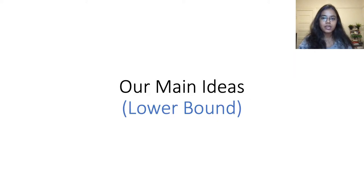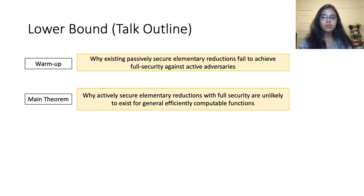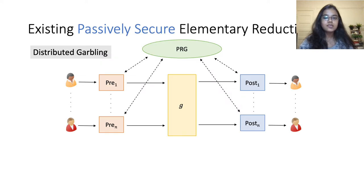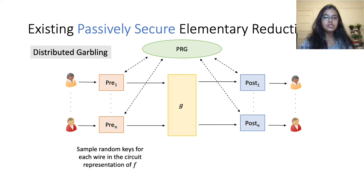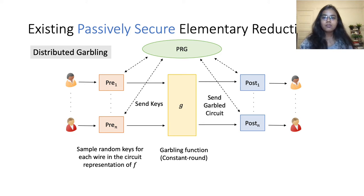Let me now elaborate on the main ideas used in our lower bound result. To build intuition, I will begin by showing why existing passively secure elementary reductions fail to achieve full security against active adversaries, and then prove our general theorem. All existing passively secure elementary reductions can be viewed as a distributed variant of garbling, where in the pre-processing phase the parties sample random keys corresponding to each wire in the circuit representing the function f. These keys are then sent to the function G.